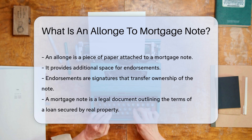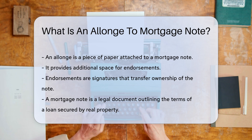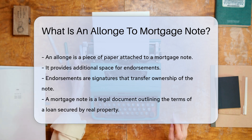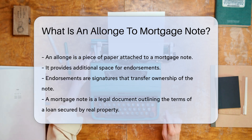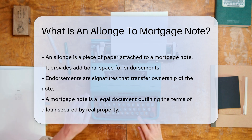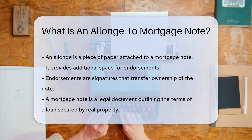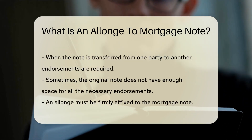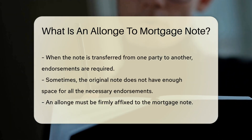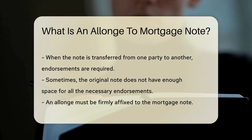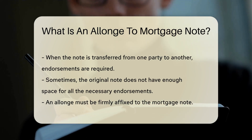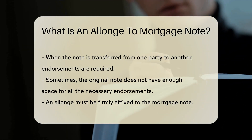A mortgage note is a legal document outlining the terms of a loan secured by real property. When the note is transferred from one party to another, endorsements are required. Sometimes the original note does not have enough space for all the necessary endorsements. This is where an allonge becomes useful.